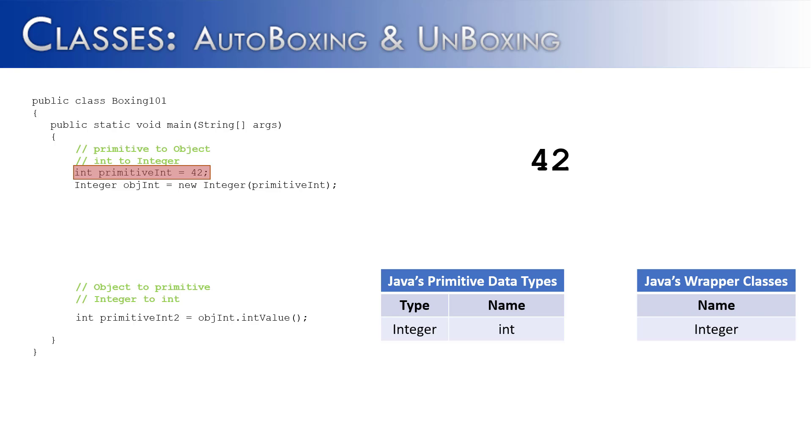Effectively converting it into an object. And that's what I've done on the next line. You see on the left I have objint which is an integer object and on the right I have the primitive int that we created on the line above and it's being passed to the integer constructor.